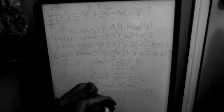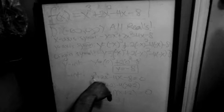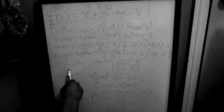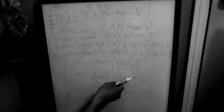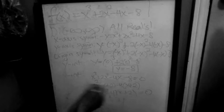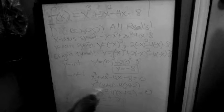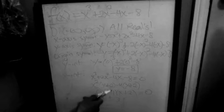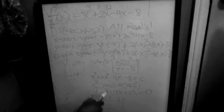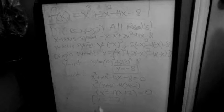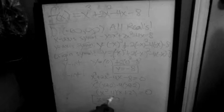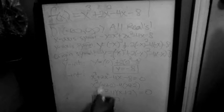Now let's find the intercepts. Starting with the y-intercept: plugging in 0 for x gives y = −8, so we have a y-intercept at (0, −8). For the x-intercepts, I do some quick factoring by grouping, which gives (x² − 4)(x + 2) = 0. This yields x = ±2, so we get x-intercepts at (−2, 0) and (2, 0).